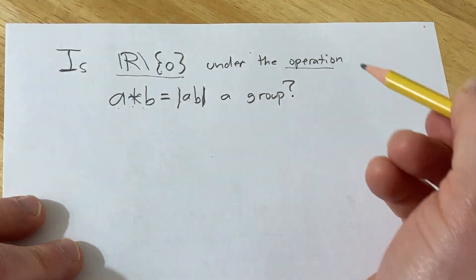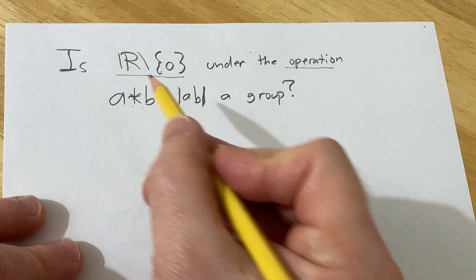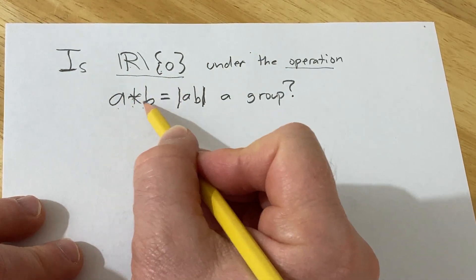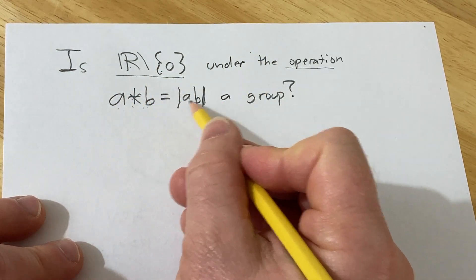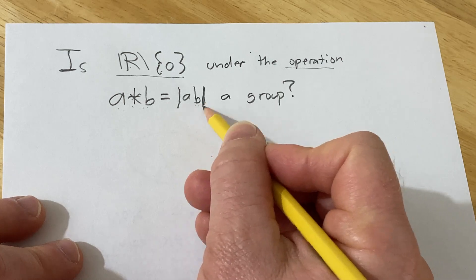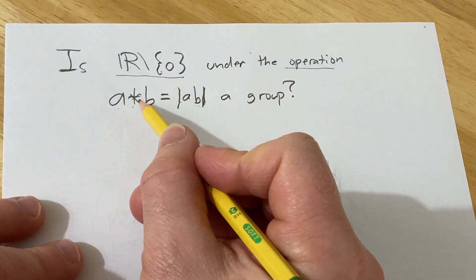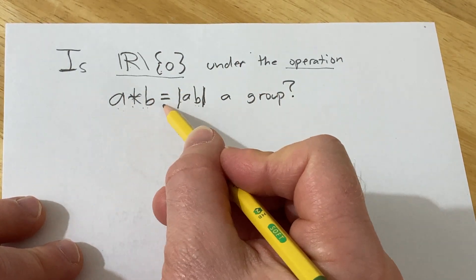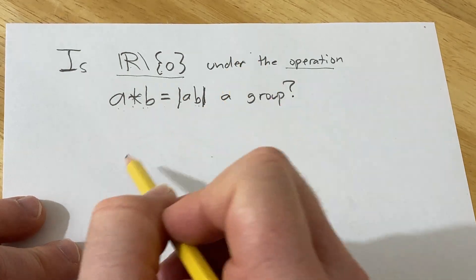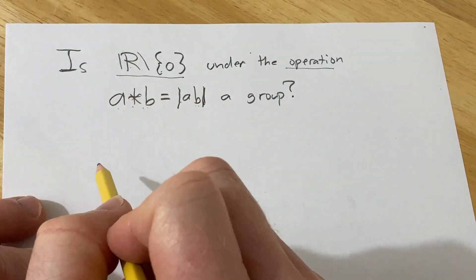This is certainly a binary operation on this set, because if you take two elements in this set that aren't zero, multiply them, and take the absolute value, the result will also not be zero, since the product of non-zero elements is non-zero. So this is a valid binary operation on this set.